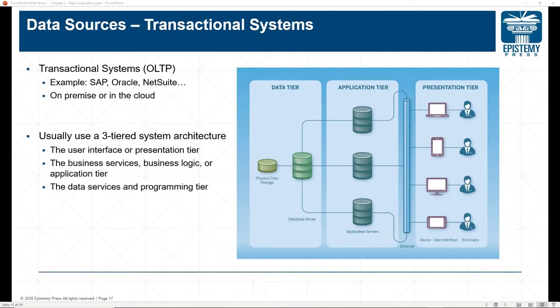There are transactional systems, or online transaction processing — OLTP — that support high-volume business transactions. These usually use a three-tiered system architecture: the presentation tier (what the user sees), the application tier (where the logic takes place to perform transactions), and the data tier (where data is stored and communicated via the database server).